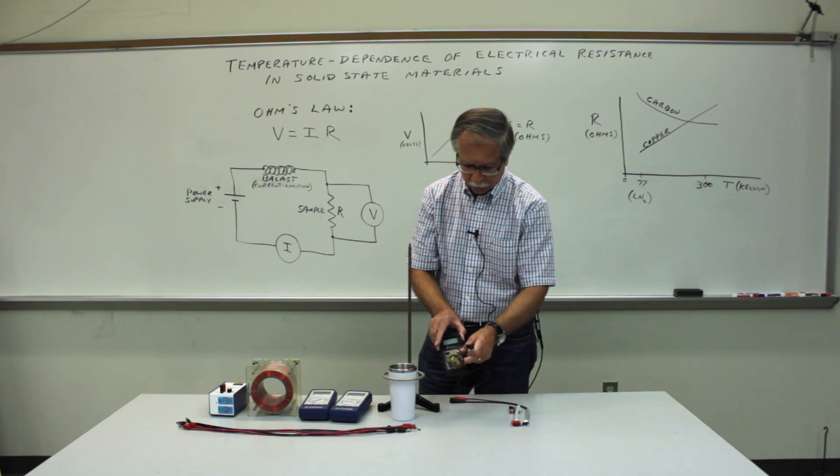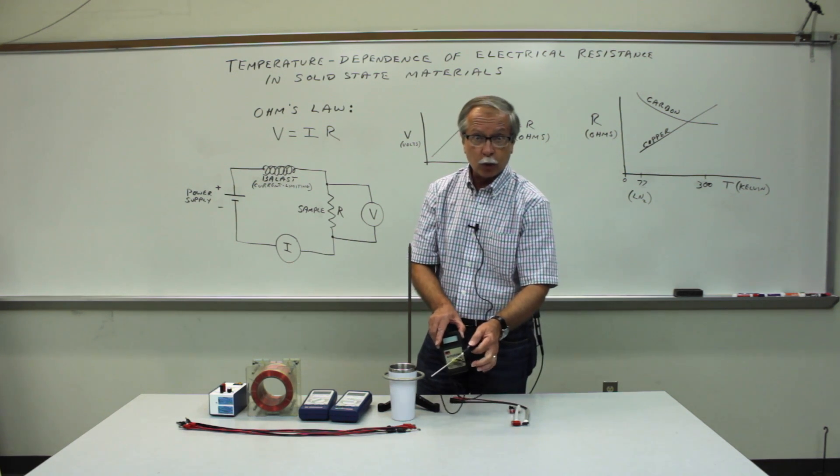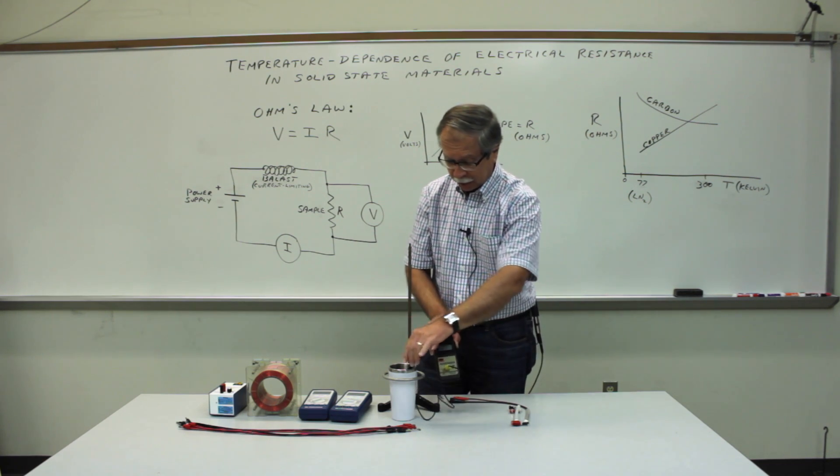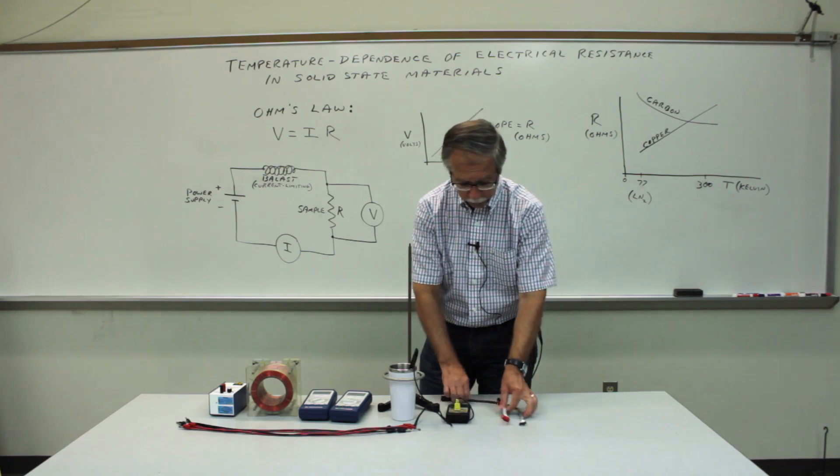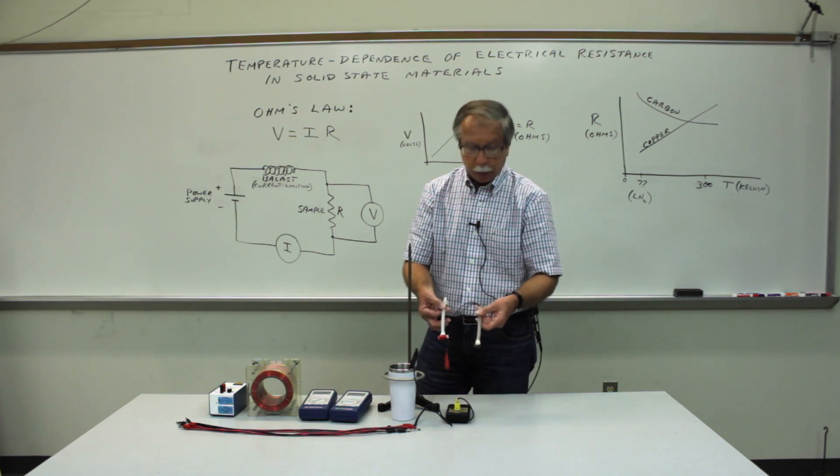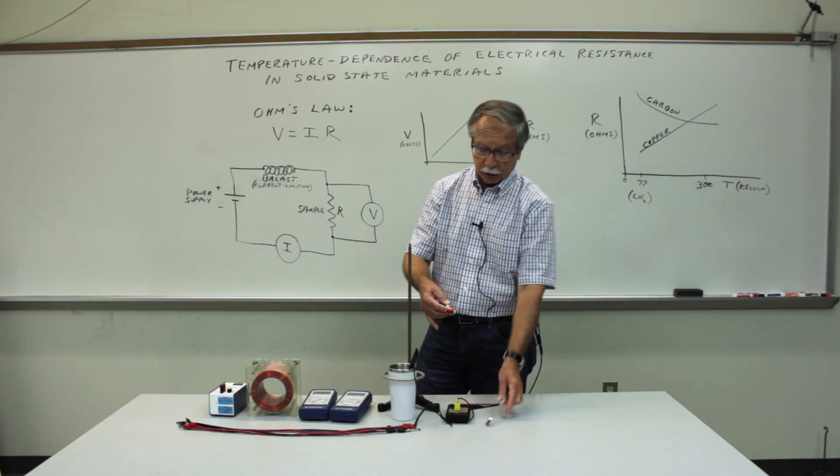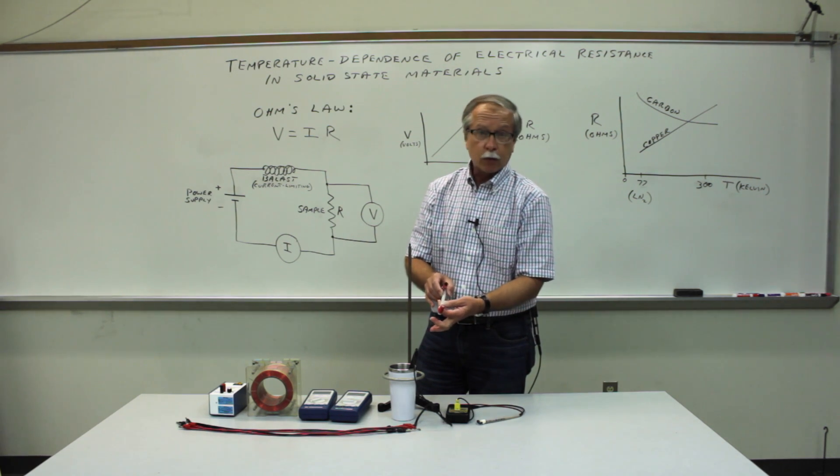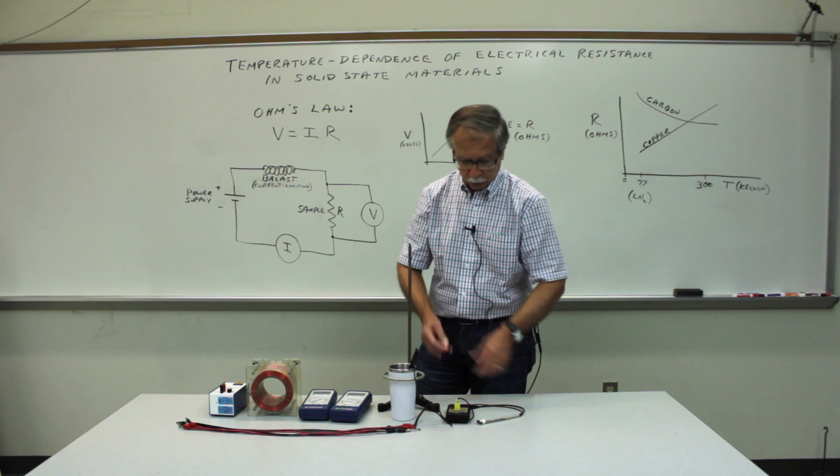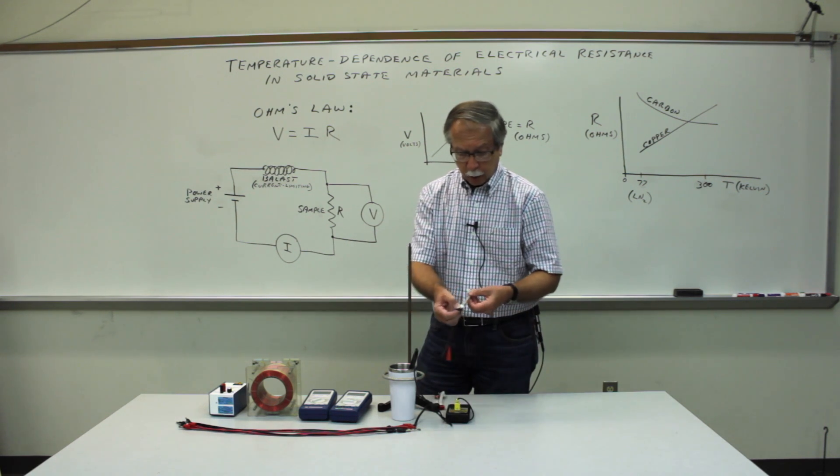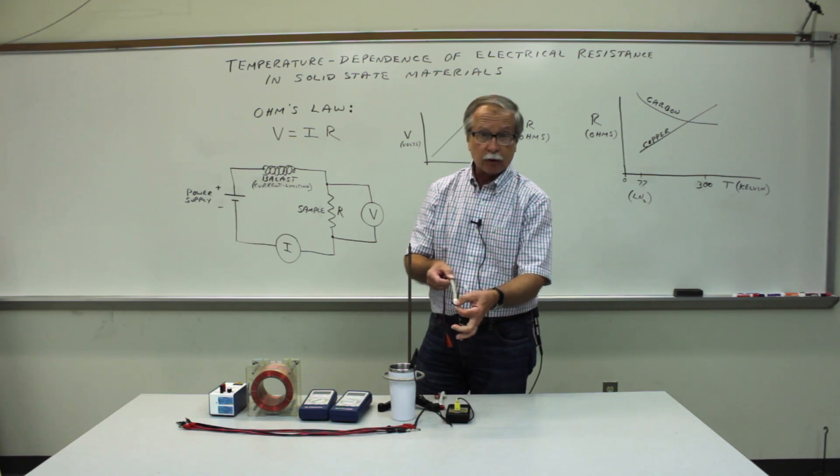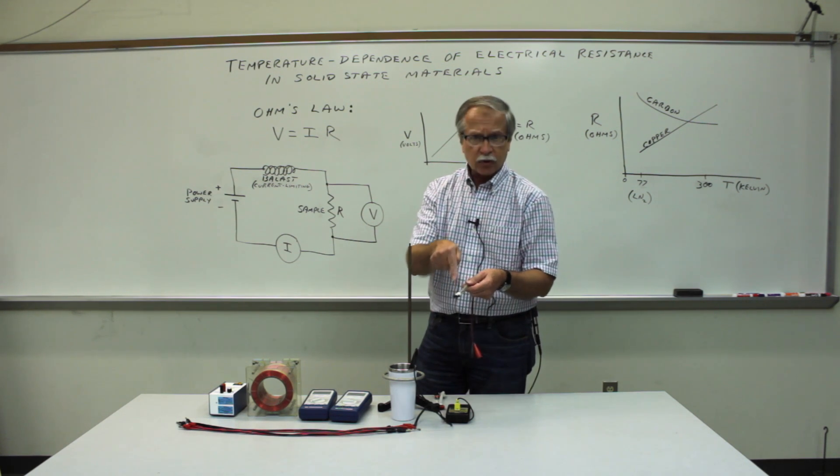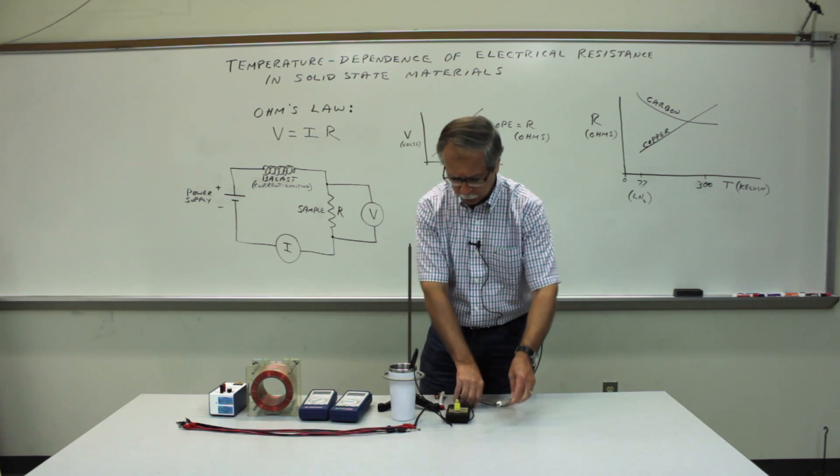The temperature of the room temperature and ice water and hot water will be measured with the digital thermometer. We'll just put that in the container along with the sample. These samples are homemade. The copper sample is just a little coil of copper wire. Resistance at room temperature is about two or three ohms. And the carbon sample is just some little carbon resistors connected together. And the resistance of this at room temperature is about two or three ohms.